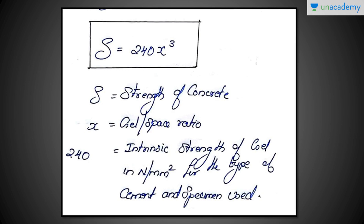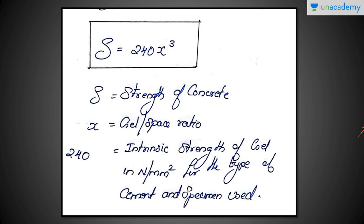The Powers equation calculates the theoretical strength of concrete. The relationship is: S = 240 × X³, where X is the gel space ratio and 240 is the intrinsic strength of gel in Newton per mm² for the type of cement and specimen used.